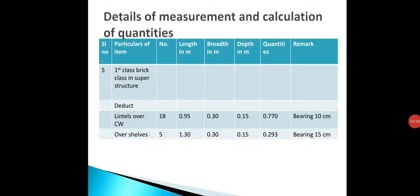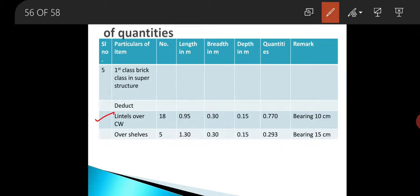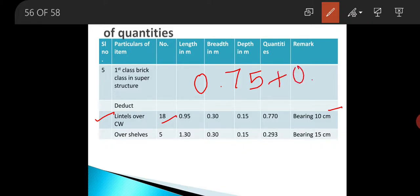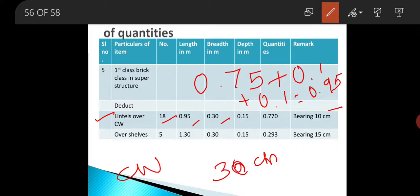Then we will deduct the lintel present over the clerestory window, that is the CW opening. There are 18 numbers of CW openings whose length is 0.75 m. In the remark column write 'bearing 10 cm,' so the length becomes 0.95 m. All these CW openings are made in the 30 cm wall, so the width is 0.3 m and depth is 0.15 m. Multiplying all these gives a quantity of 0.770 cubic meters.